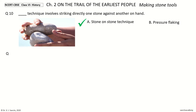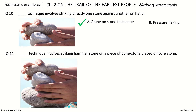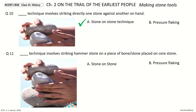Question 11: Dash technique involves striking a hammer stone on a piece of bone or stone placed on the core stone. And the answer is pressure flaking.